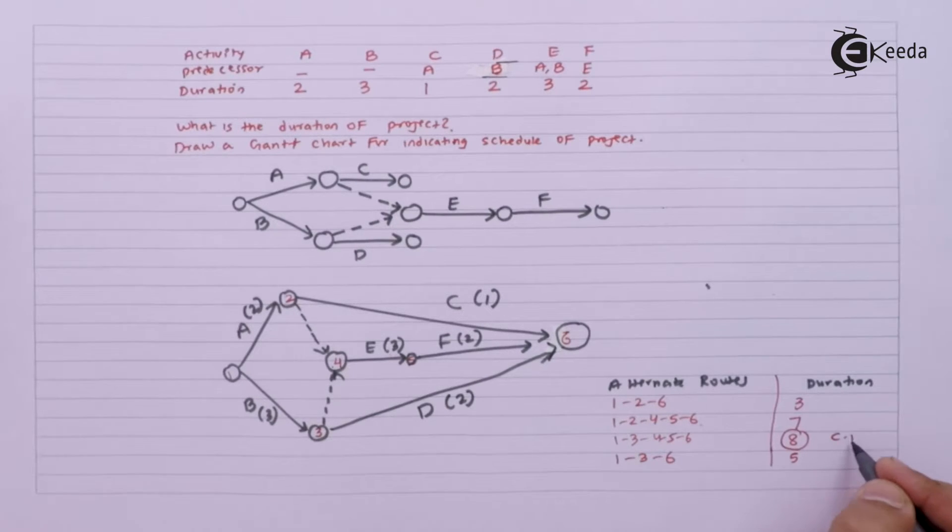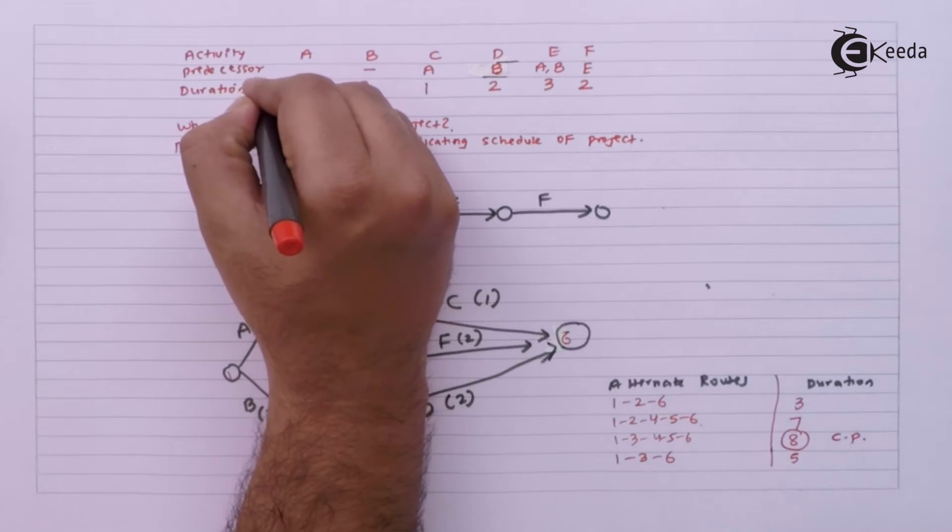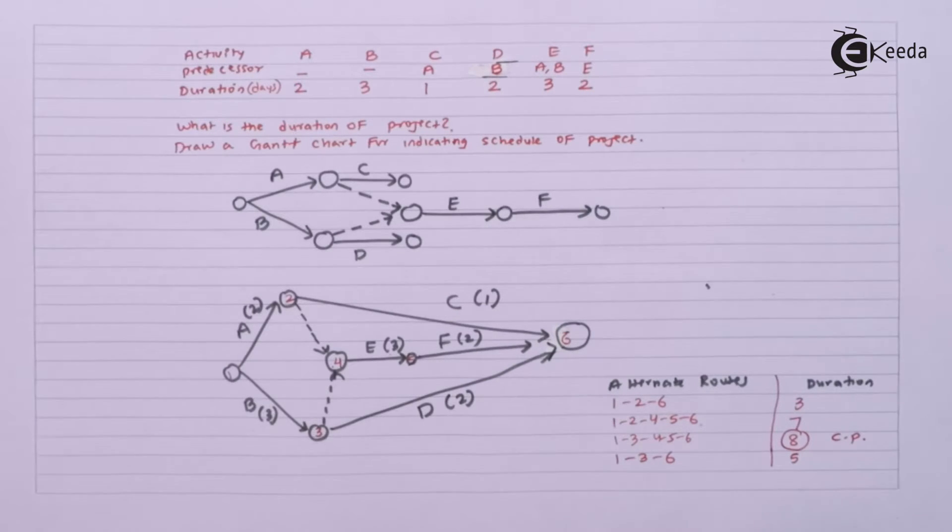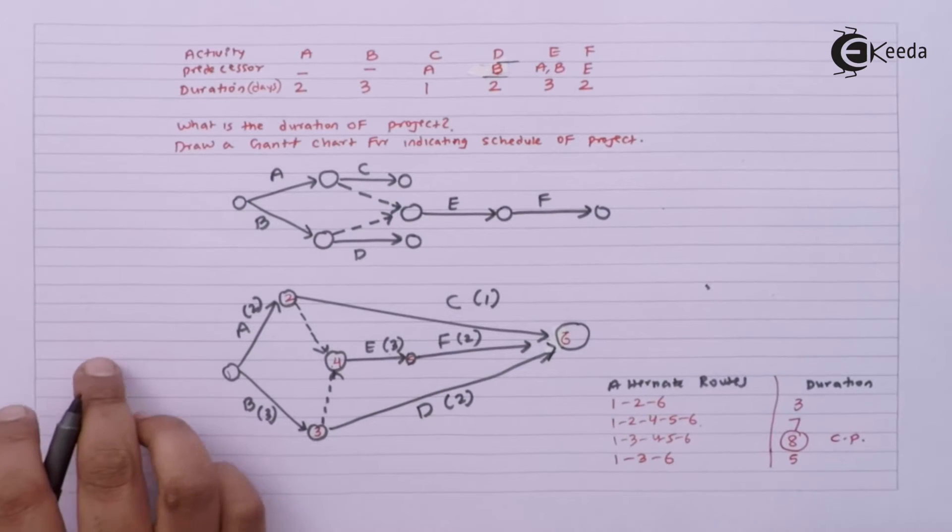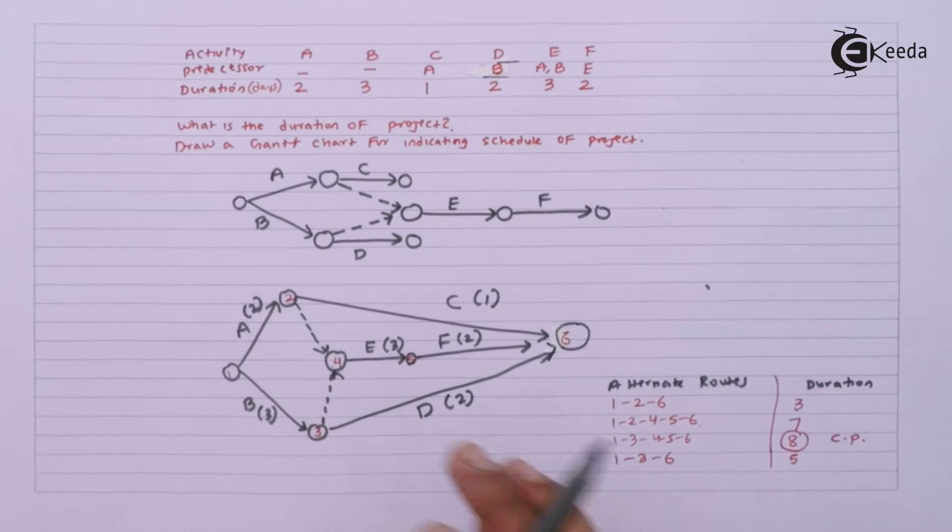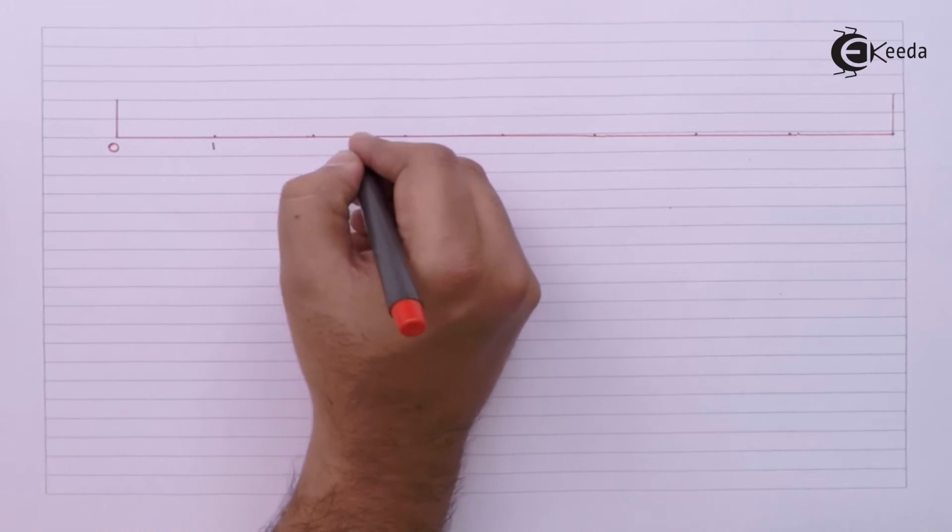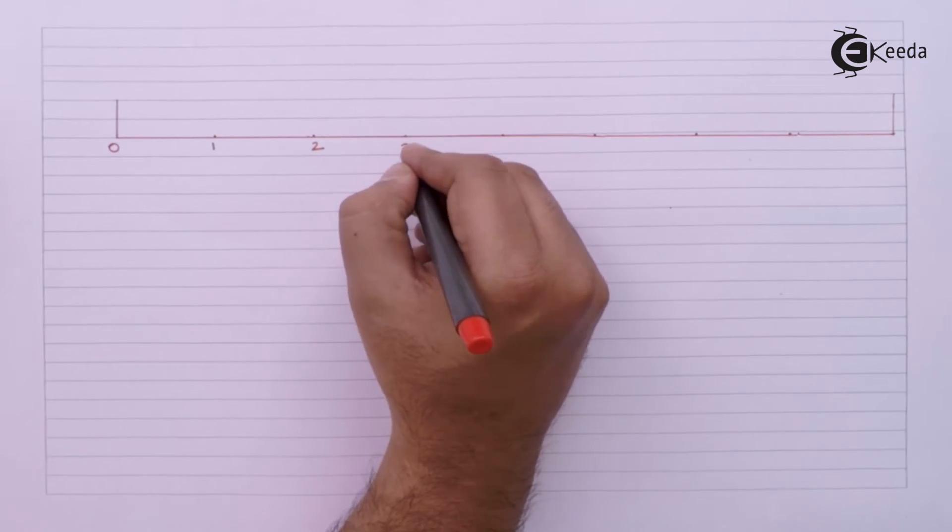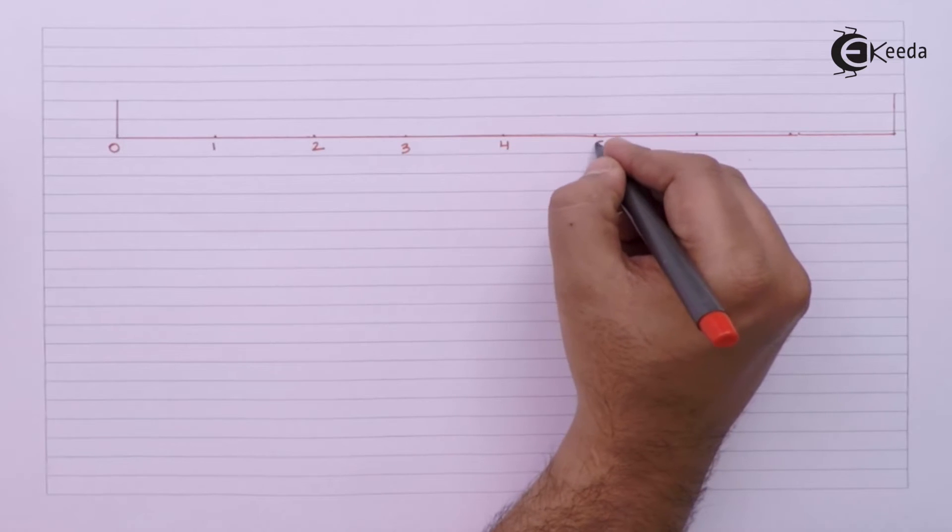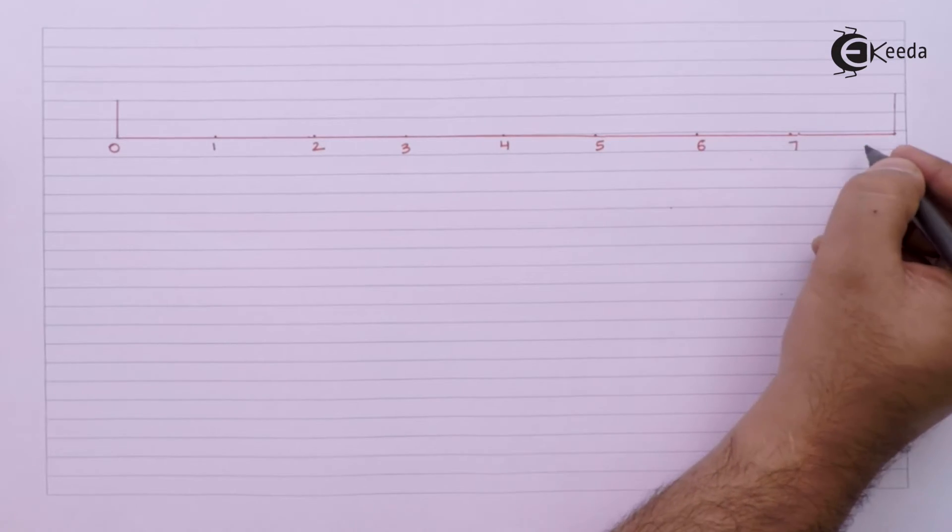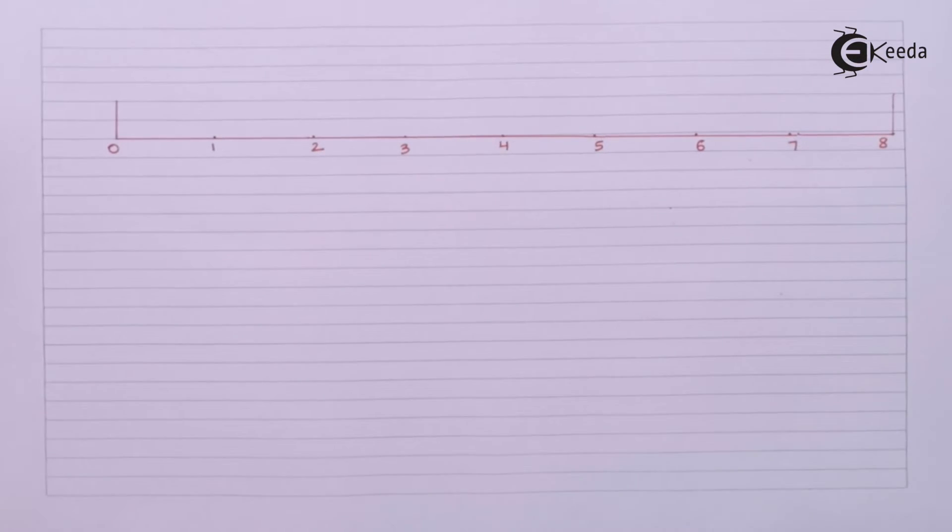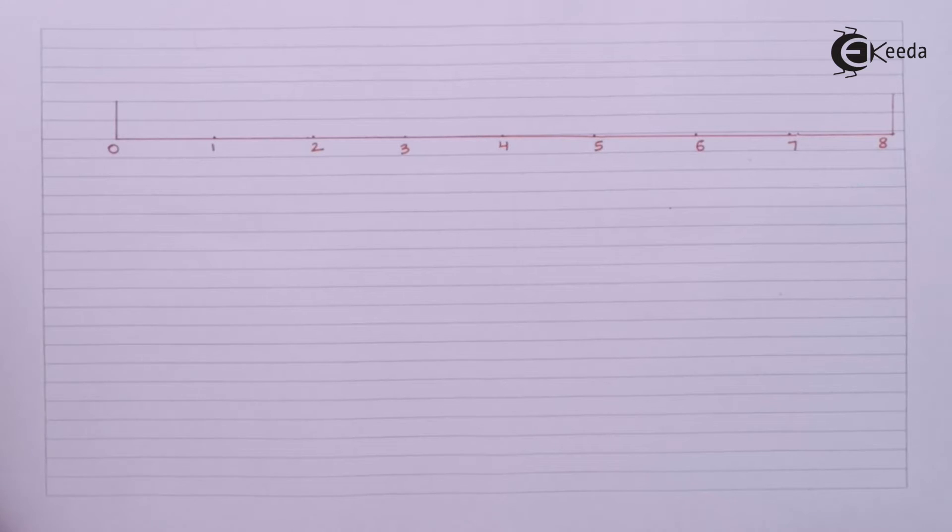For this critical path we need to draw the Gantt chart for eight days. Let's draw the Gantt chart now. We have eight days so I will make this: zero, one, two, three, four, five, six, seven, and eight, because our project is for eight days.